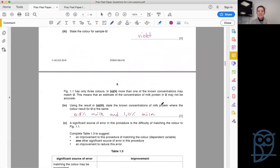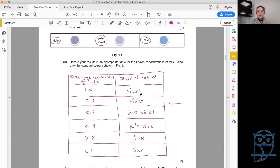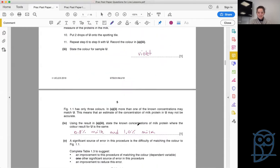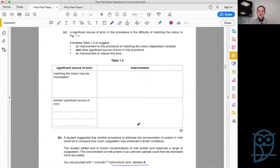So now we've got our results. We figured out where U is. What comes next? Consideration of what we're doing. A significant source of error in this procedure is the difficulty of matching the color to figure 1.1. Whenever you're doing an experiment, you're looking for potential problems in the method. Whenever you're matching colors, it's really difficult. Your eyes might see different colors to my eyes. We're not exactly the same. And is it violet or pale violet? It's just tricky.